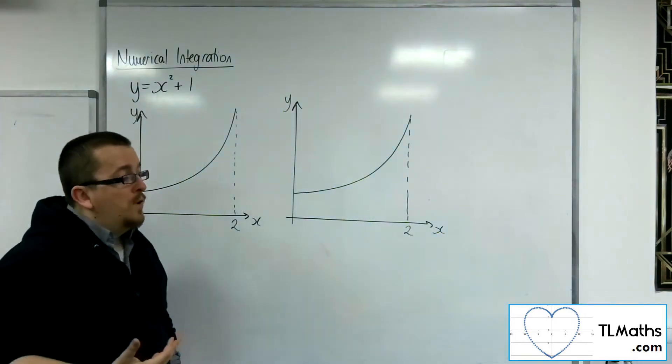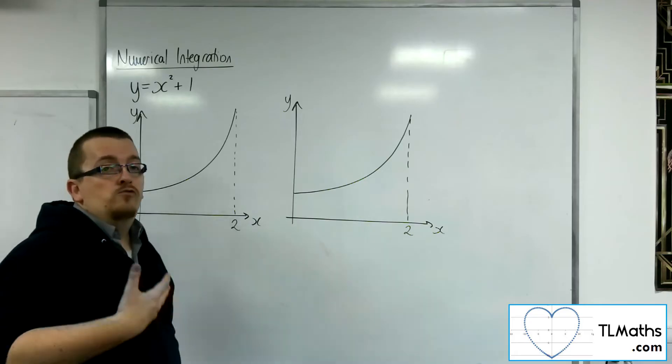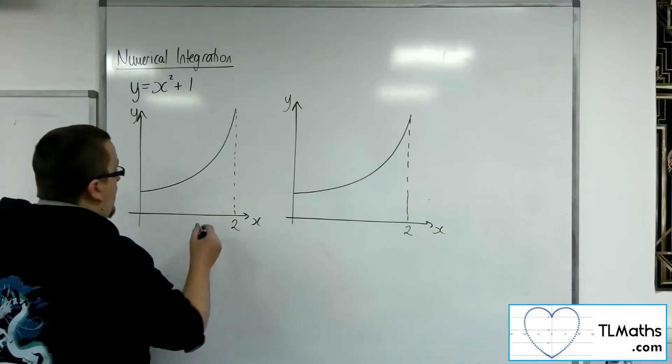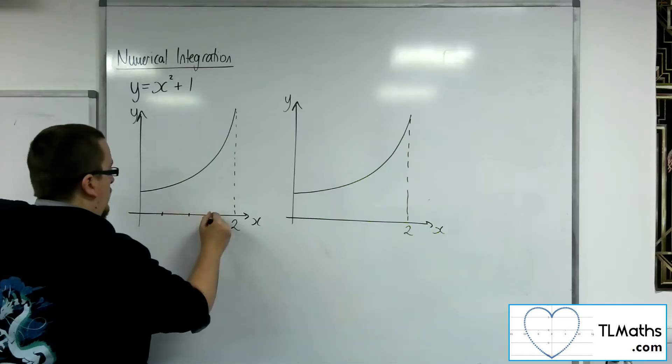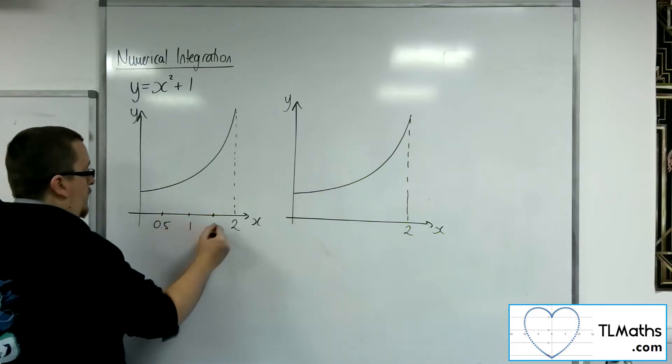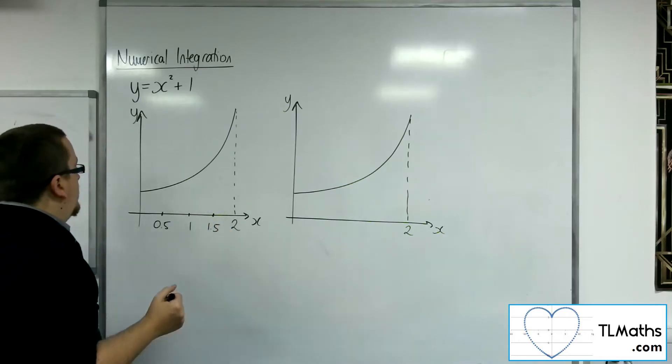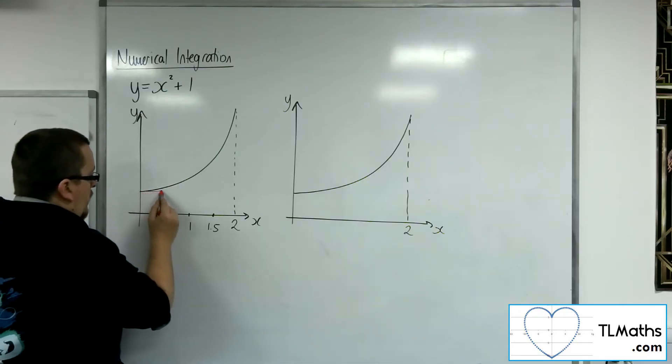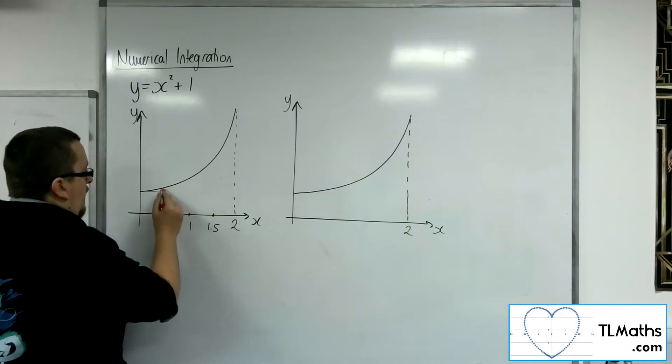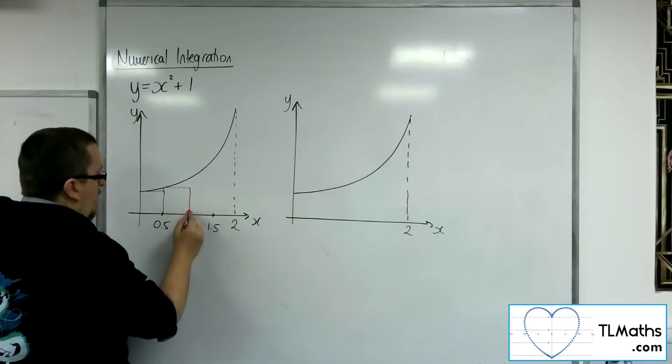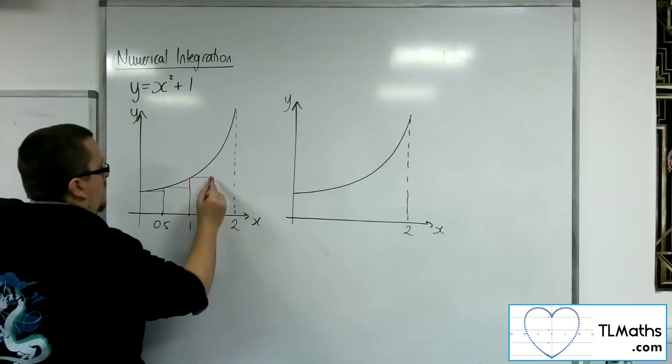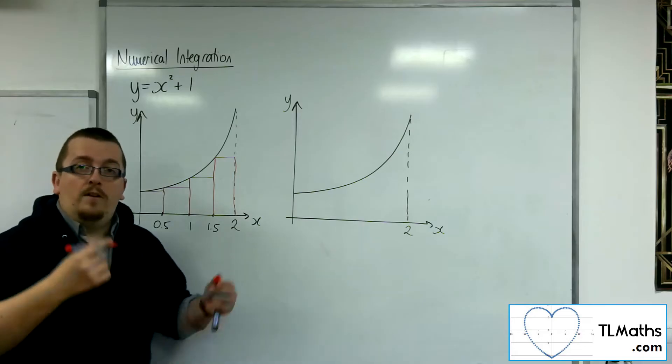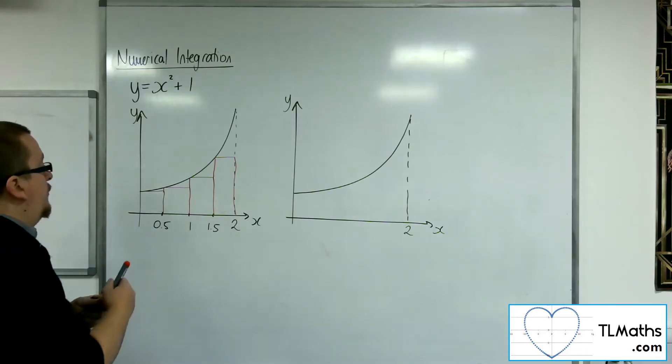And one such way would be to perhaps use rectangles in order to do it. This seems like a perfectly valid way. So let's say I divide this area up into some pieces. What I do is I look at this point here, and I go along, and I make that rectangle there. Then I go up to the curve, I make that rectangle there. Then I go up to the curve, I make that rectangle there. And then I go up to the curve, and I make that rectangle there. And then what I can do is work out the area of those rectangles and add them all together.